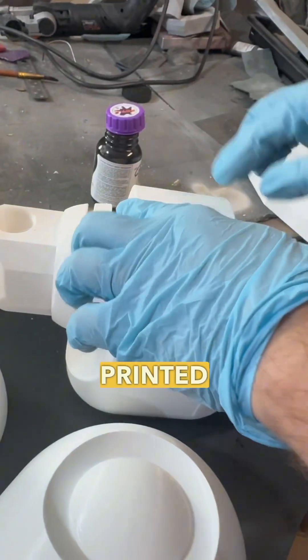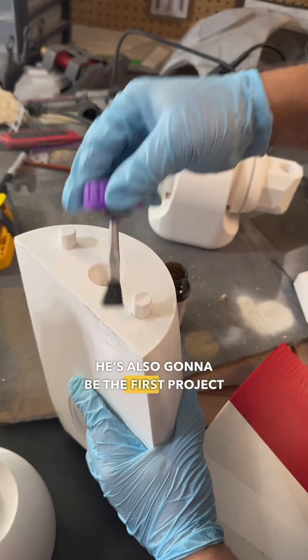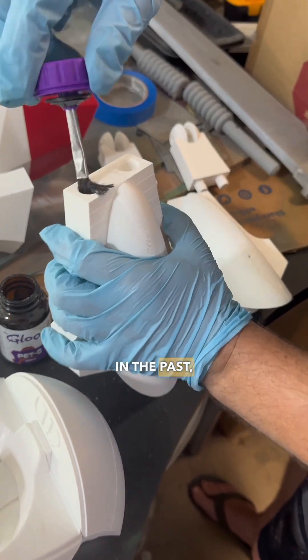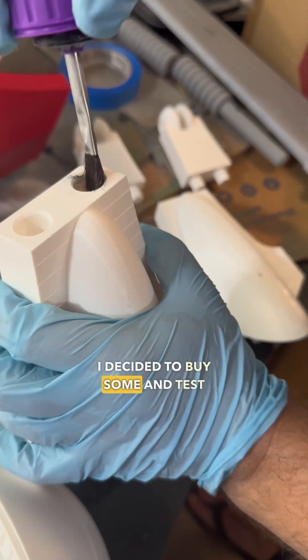And on top of him being the first droid we've printed in PETG, he's also gonna be the first project that we've used 3D Gloop to connect pieces with. I've heard a lot of people talk about the Gloop products in the past, so for this project I decided to buy some and test it out for myself.